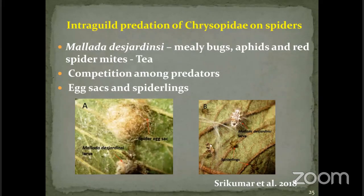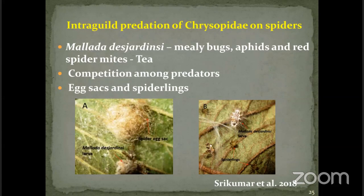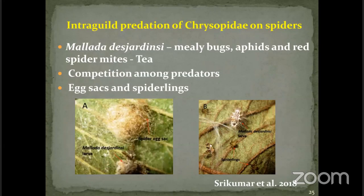Usually this doesn't happen — Mallada is known to feed only upon soft-bodied insects, especially hemipterans like mealybugs, aphids, and other groups of red spider mites on tea. But due to competition, they also consume spiders — that is, the eggs and spider egg sacs of this specific group of spiders.